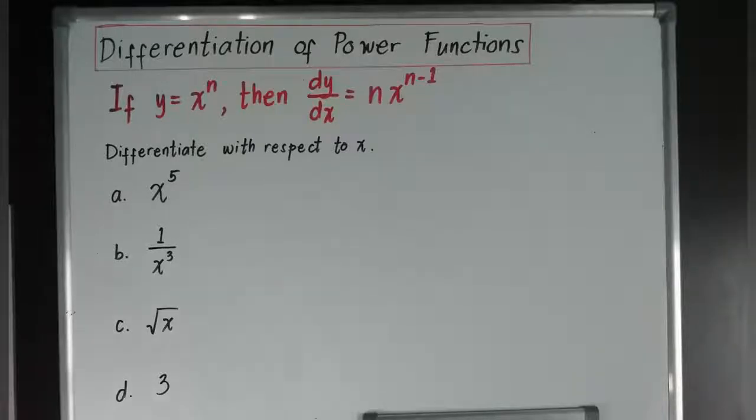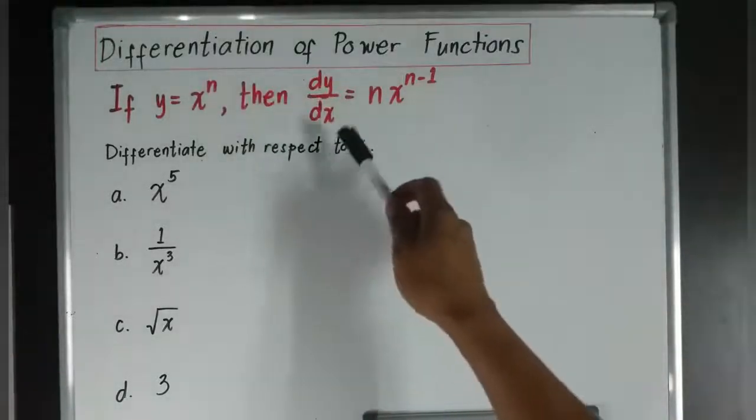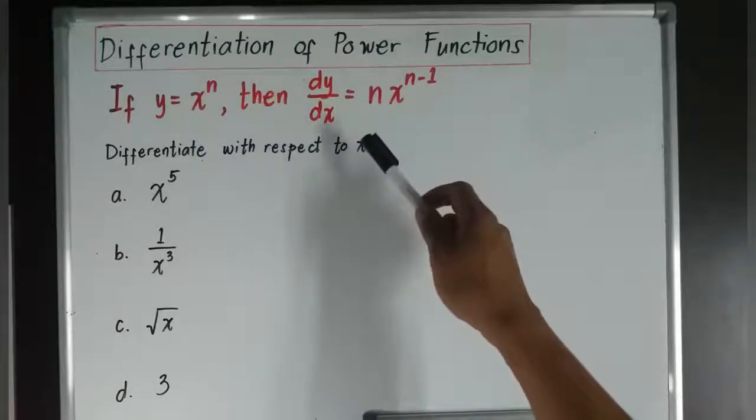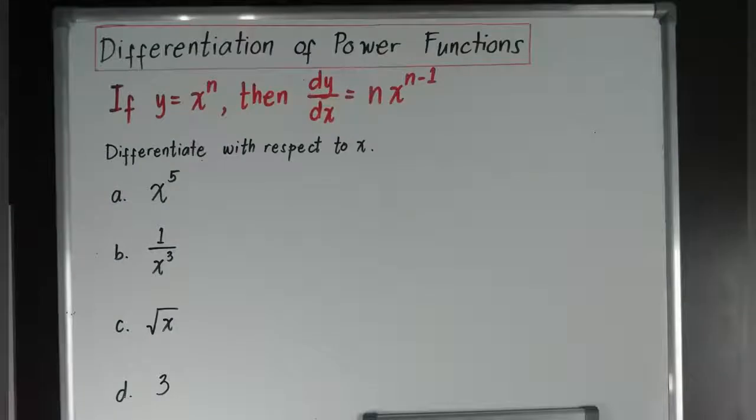There will be a rule that will be given. The rule says if y equals x power of n, then dy over dx. But by the way, what does it mean by dy over dx? dy over dx is equivalent to the derivative of that function.